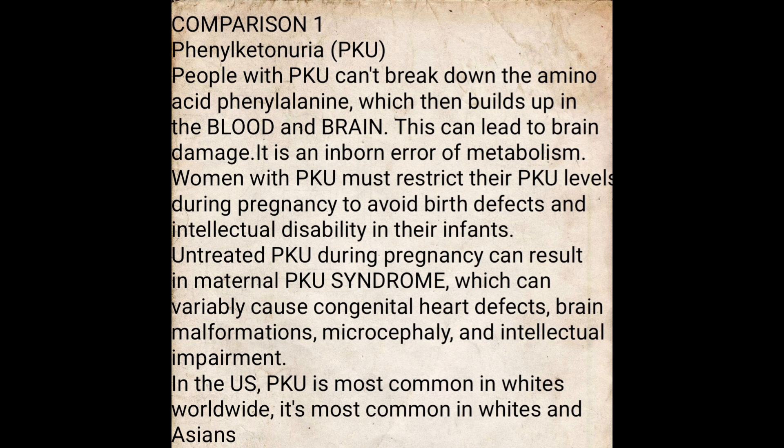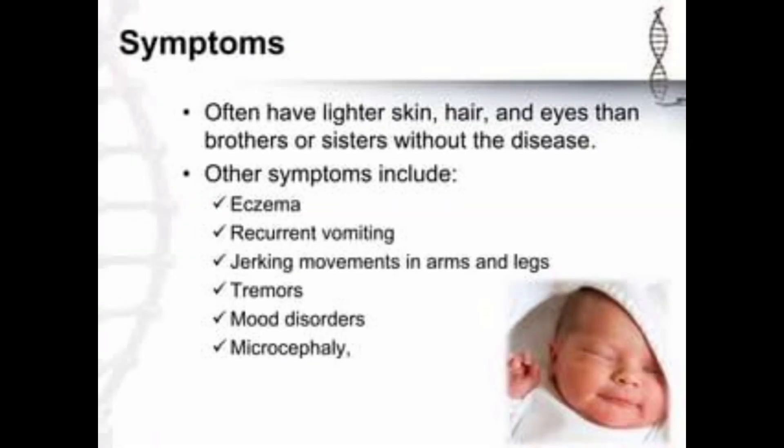In the US, PKU is most common in whites, and worldwide it is most common in whites and Asians. The PKU baby often has lighter skin — like albinos — and lighter eyes than siblings without the disease. Other symptoms include eczema, recurrent vomiting, jerky movement in the arms and legs, tremor, mood disorder, and microcephaly.